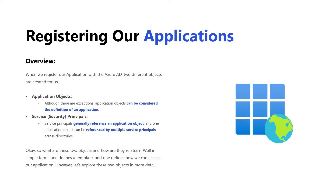We're not going to actually go through the physical step of registering an application in the Azure Active Directory just yet — we're going to reserve that for a few videos down the road. But before we do that, it's going to be really helpful to understand what happens when we go through that process and how it relates to accessing those resources. So, what does registering our application look like at a high level?